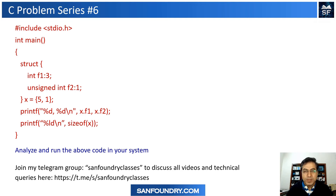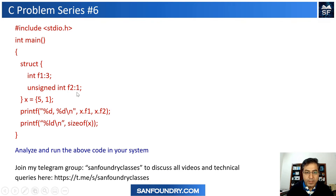Welcome to this session. We will talk about bit fields and look into a specific problem code line by line. There is a structure with two fields, f1 and f2. Since we have a qualifier, we are looking into bit fields. The first, f1, is a three-bit field and f2 is a one-bit field.